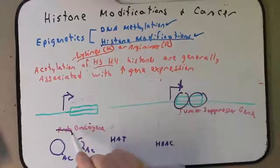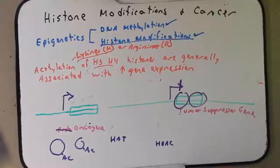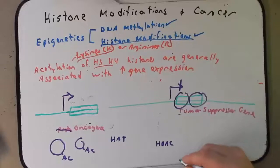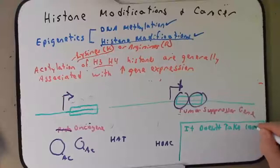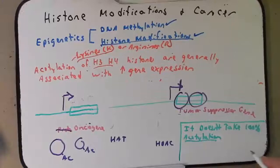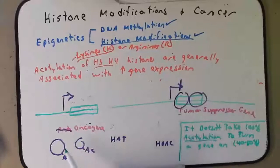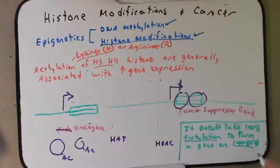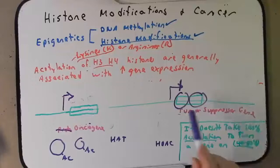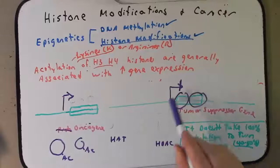If these two genes are permanently in a state where histones are deacetylated over a tumor suppressor gene — so it's always turned off — and the histones are permanently acetylated over a proto-oncogene so it's always on, making it an oncogene, then the cell cycle checkpoints would not occur and the cell would accumulate mutations on its road towards forming a cancer. It doesn't take 100% acetylation to turn a gene on — somewhere around 40 to 50% acetylation is enough to at least weakly turn a gene on, and as it becomes more acetylated it will increase in expression.